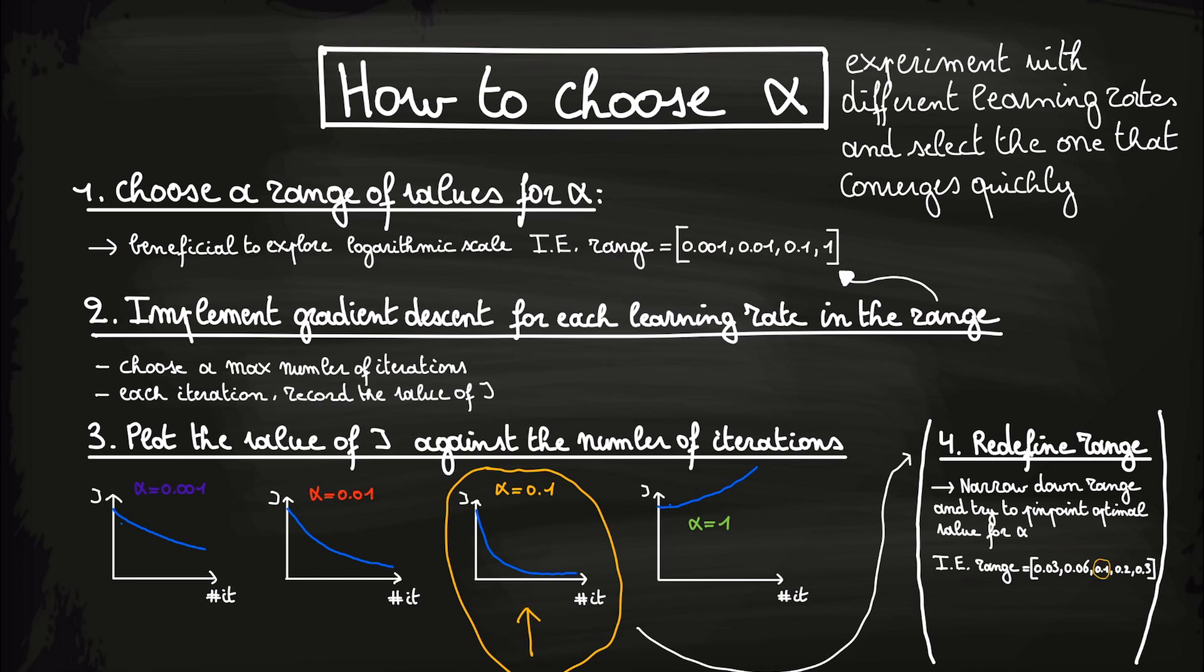If we now do steps 1 up until step 3 again, we might find that alpha equal to 0.2 gives an even better value for the learning rate.